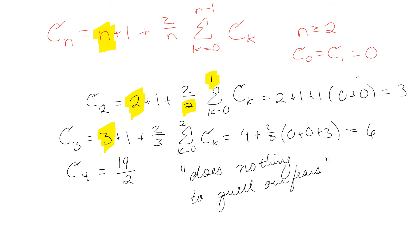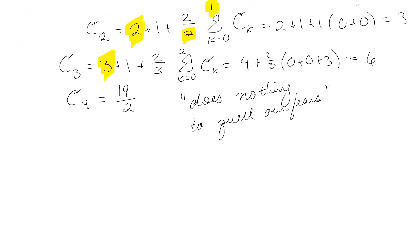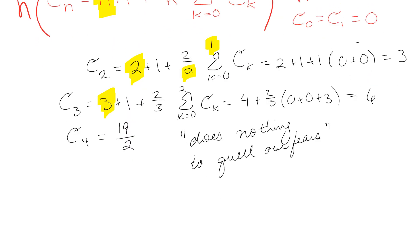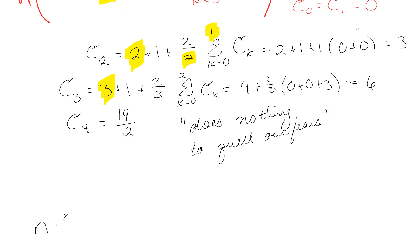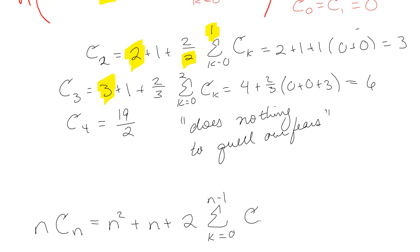Fractions are scary, so let's multiply that whole thing by n. We're going to end up with: n·C(n) = n² + n + 2 times the summation from k = 0 to n − 1 of C(k). And this is valid for n ≥ 2.